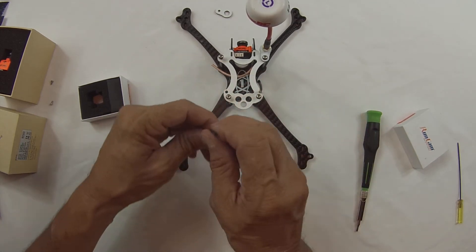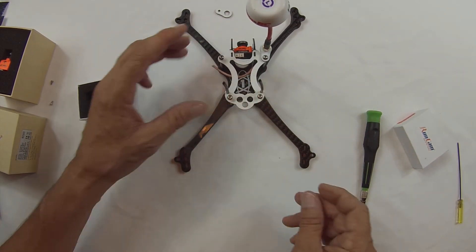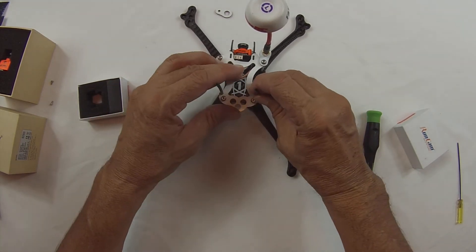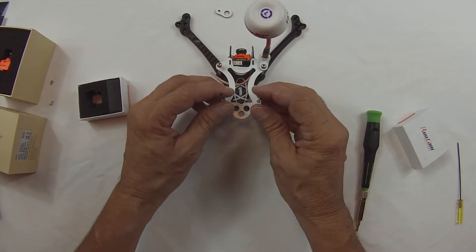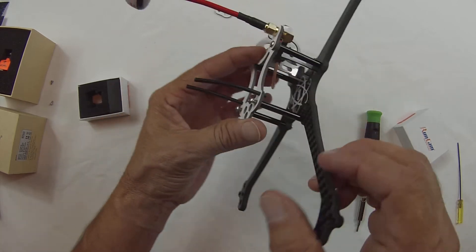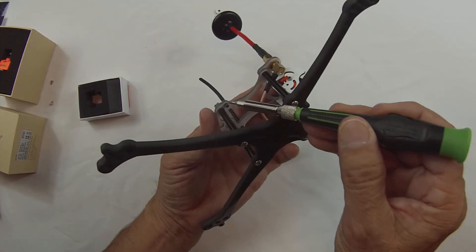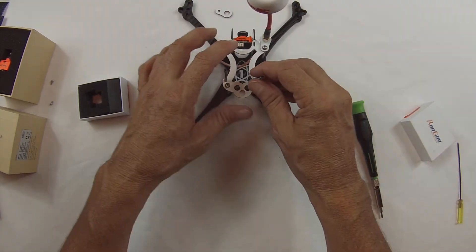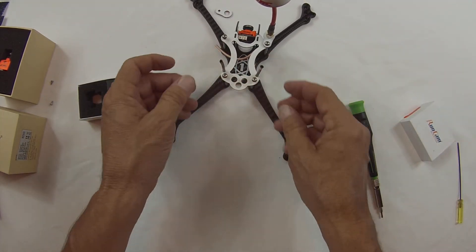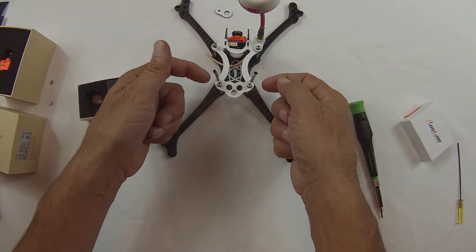Pretty much grab one of these, you place them in here. Now if it's a little loose, all you do is just grab a little bit of CA and just put a little bit of CA right there on the side. And that'll hold it in place. And then you could run your receiver antennas through here.